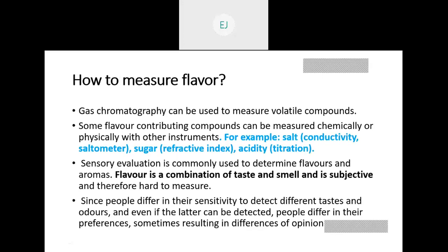So that was what flavor is and how different kinds of flavors are present. Now how we can measure the flavor — in case of measuring the flavor, there are some methods. Gas chromatography is an important method that actually measures the volatile compounds. With that, some flavor-contributing compounds can be measured chemically or physically with some instruments. For example, salt can be measured by conductivity or a saltometer, and sugar can be measured by refractometry, and acidity by titration.